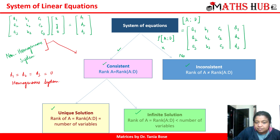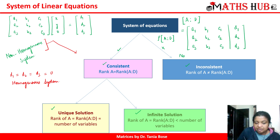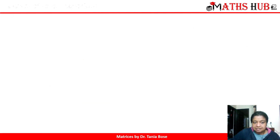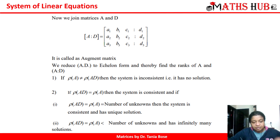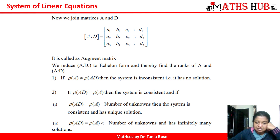To summarize: the system of equations can be consistent or inconsistent. Inconsistent means both ranks are unequal; consistent means the ranks are the same. When ranks are equal to the number of variables, it leads to a unique solution. When the rank is less than the number of variables, it leads to infinitely many solutions. In words: when rank of A is not equal to rank of [A|D], the system is inconsistent. When rank of [A|D] equals rank of A, the system is consistent with two cases — equal to the number of unknowns gives unique solution, less than gives infinitely many solutions.